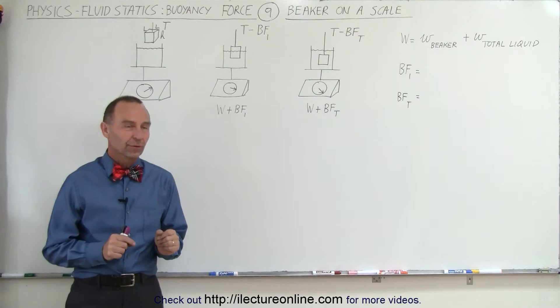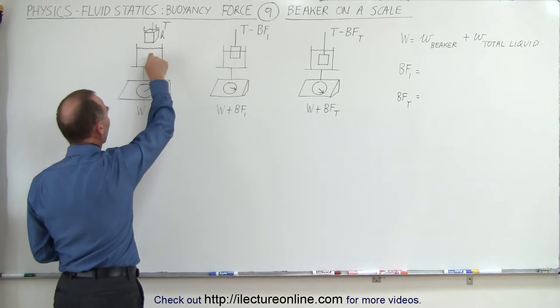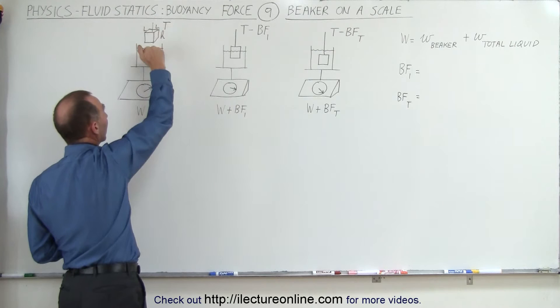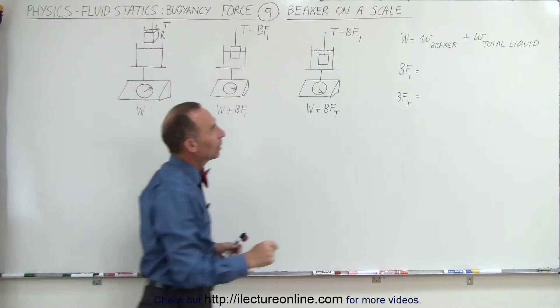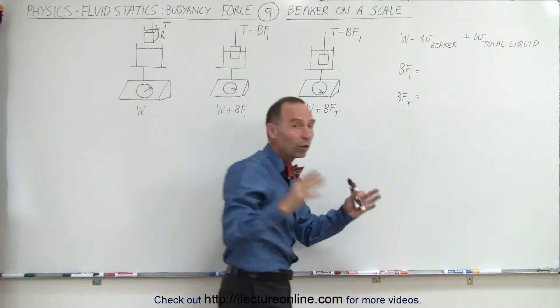Welcome to our lecture online. This type of problem often confuses students. Here we have a scale with a beaker and some liquid on top, assuming the liquid is water. Notice that we have an object suspended above but not making any contact, which means that the weight as measured by the scale will be equal to the weight of the beaker plus the weight of the liquid. The total weight w is simply the weight of the beaker plus the weight of all the liquid inside the beaker.